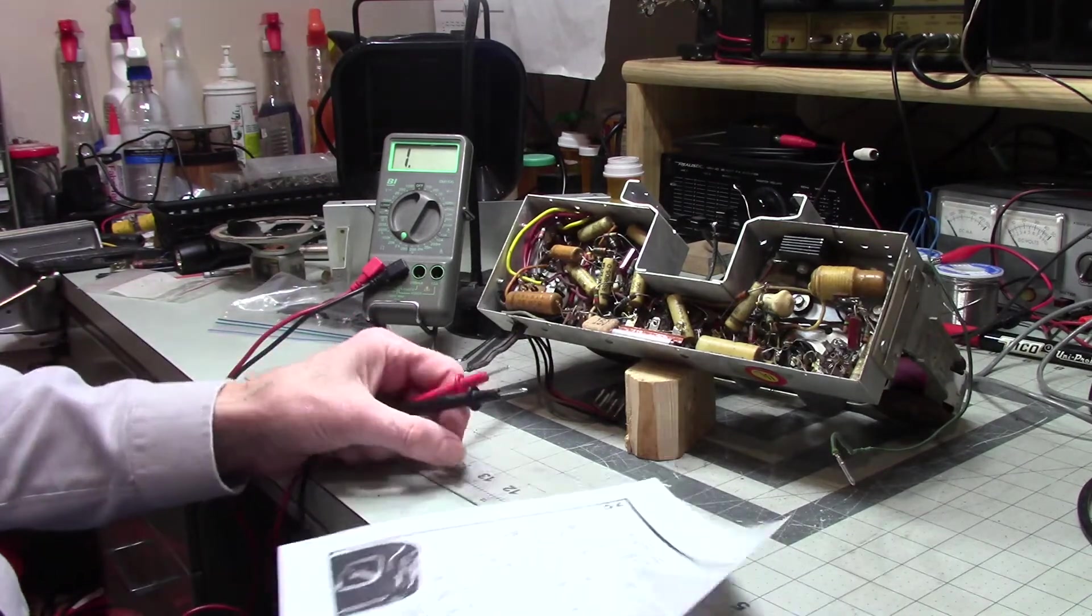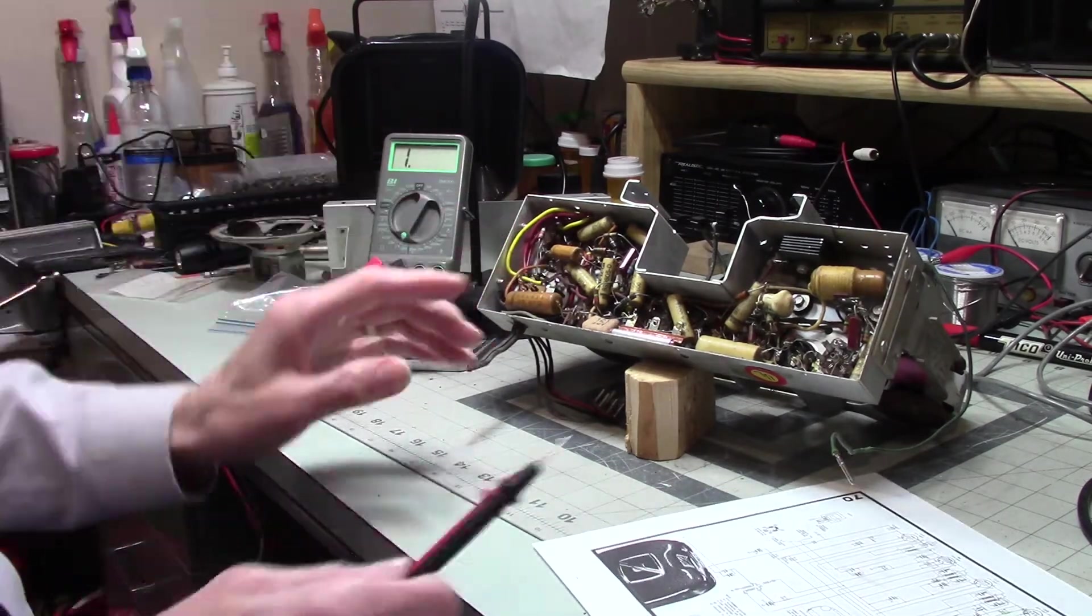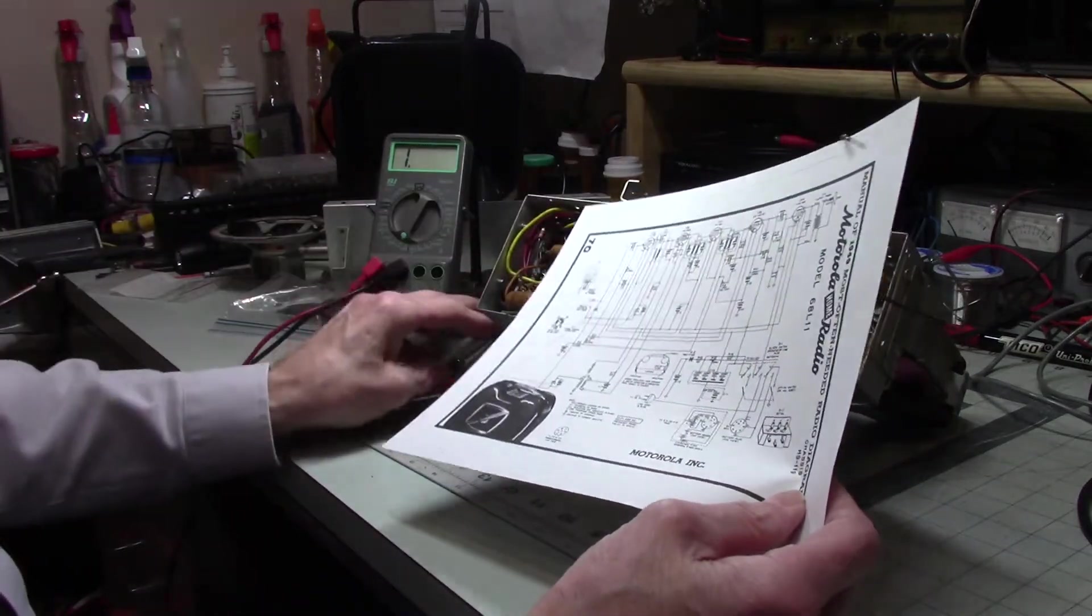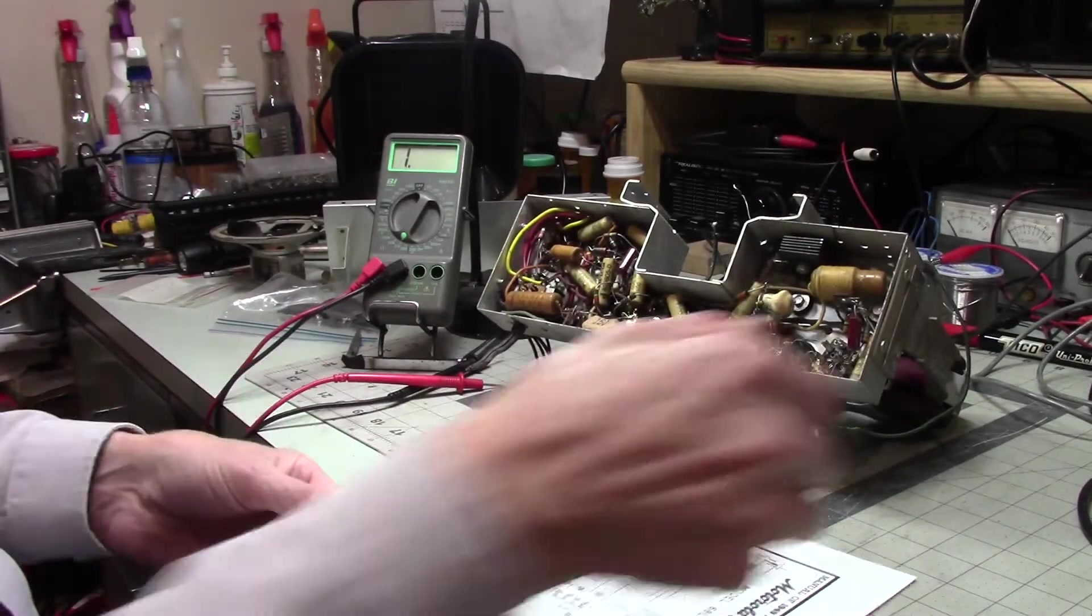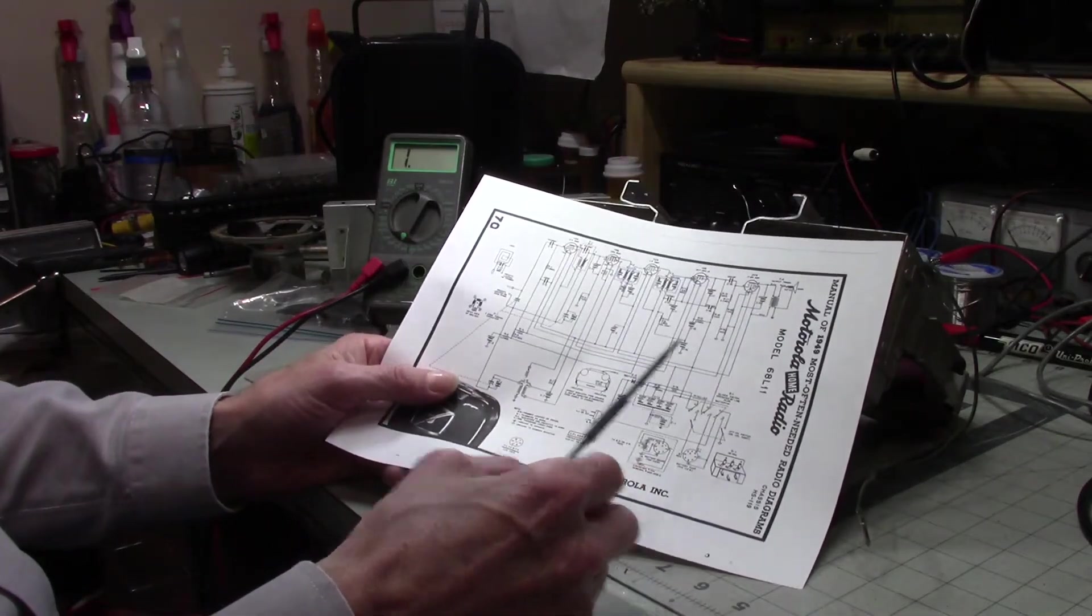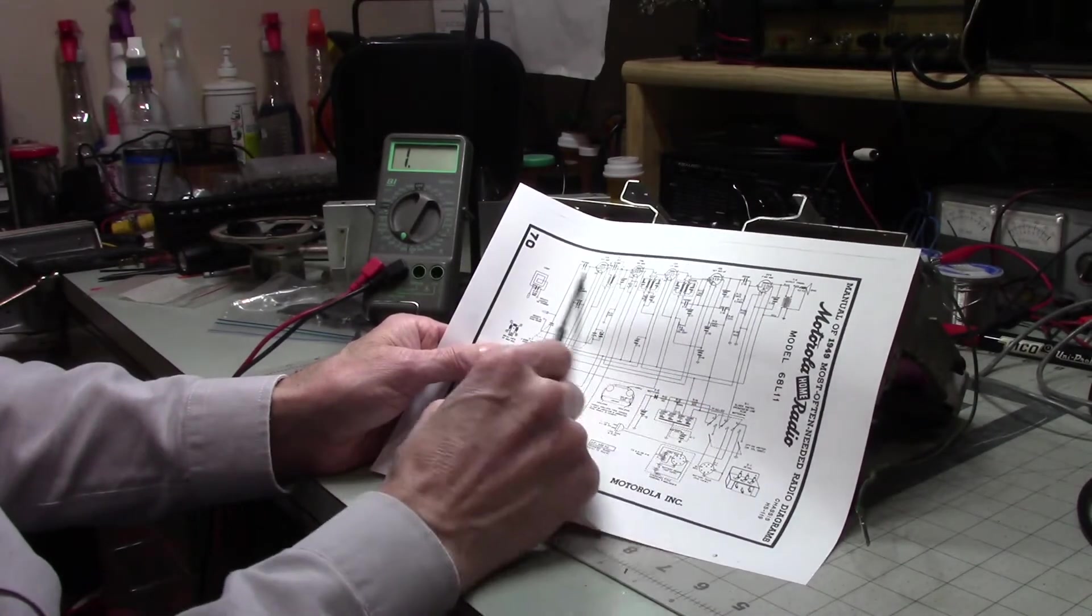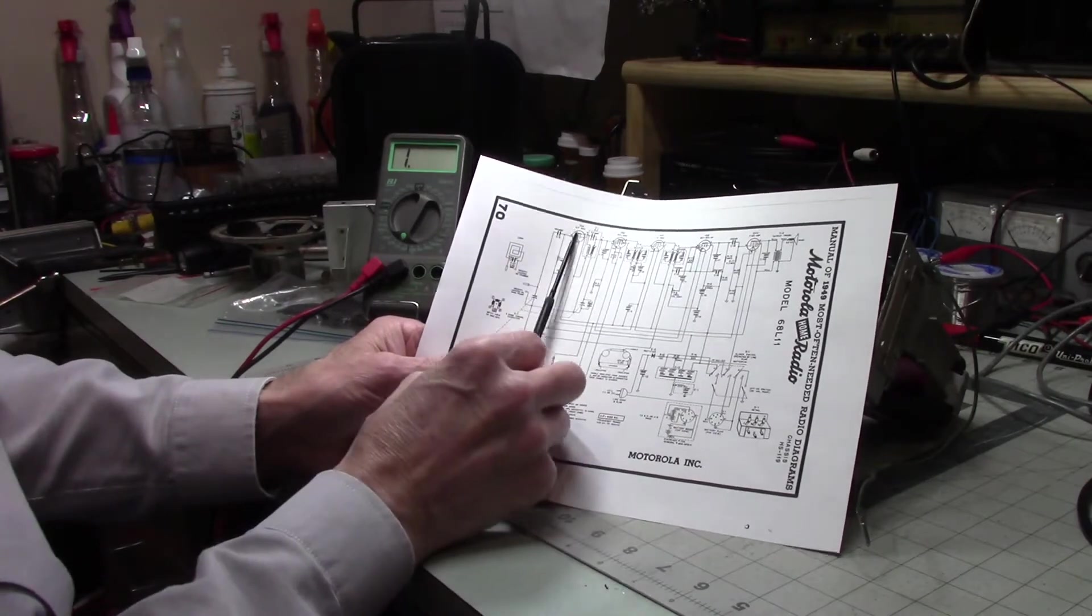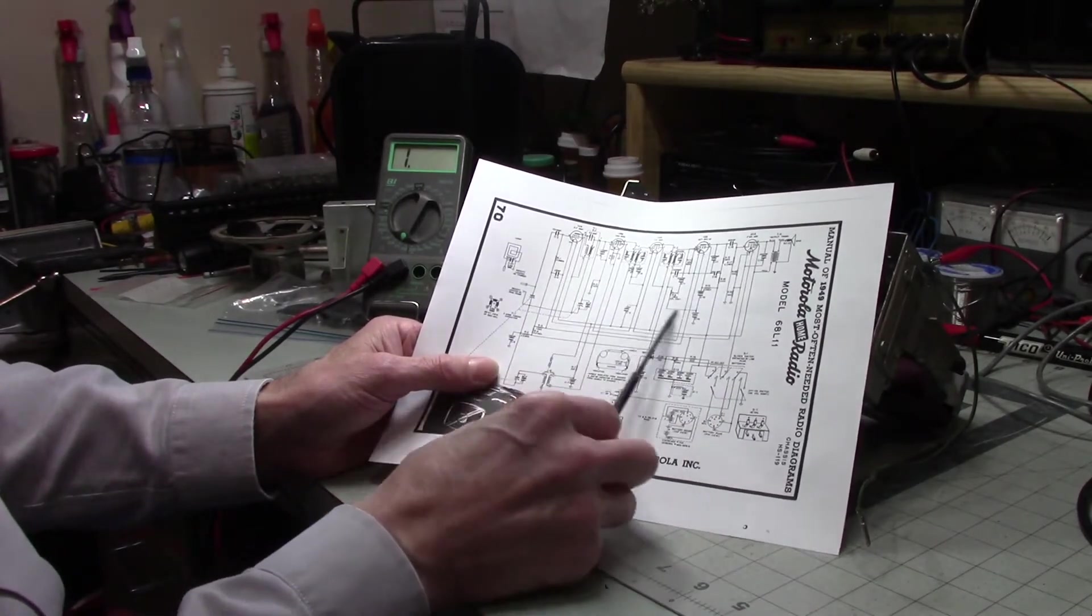This radio must be a little bit newer than the Zenith I just got done working on. So I was looking for a rectifier tube initially, but there isn't one because we've got this selenium rectifier. What I didn't notice - this is technically a 5 tube radio, but if it weren't for the selenium rectifier, this would be considered a 6 tube radio. This has the extra RF amp tube in it, which also means that this should be a decent performer.